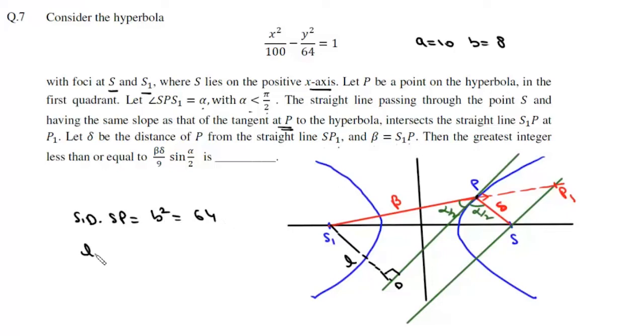Now s1d is l and sp is delta, and this equals 64. In this triangle s1dp, if we write sin alpha by 2, sin alpha by 2 will be l upon beta.